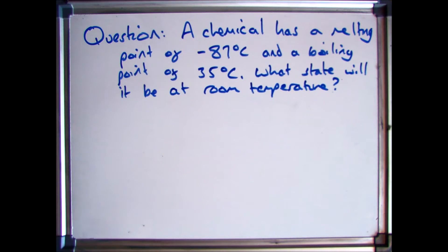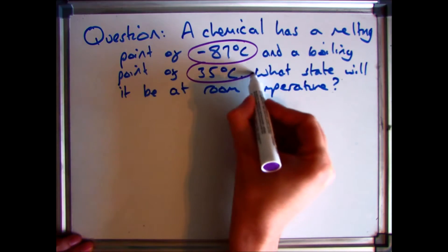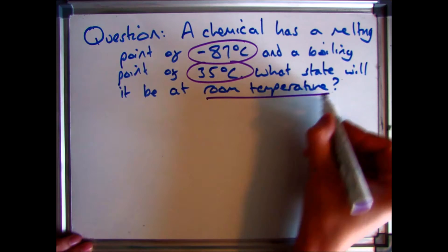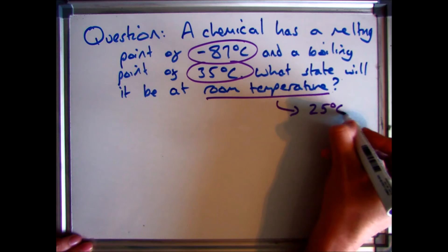The first thing you need to do is dissect it, so find out the information that you need to answer the question. So we have a melting point of minus 87, boiling point 35, and then it's asking you what it will be at room temperature. Room temperature is usually around 25 degrees C.